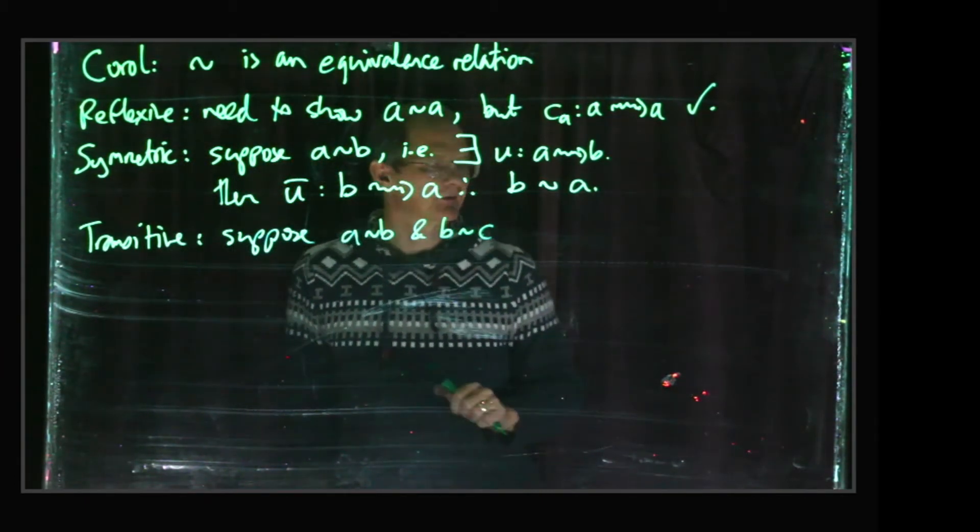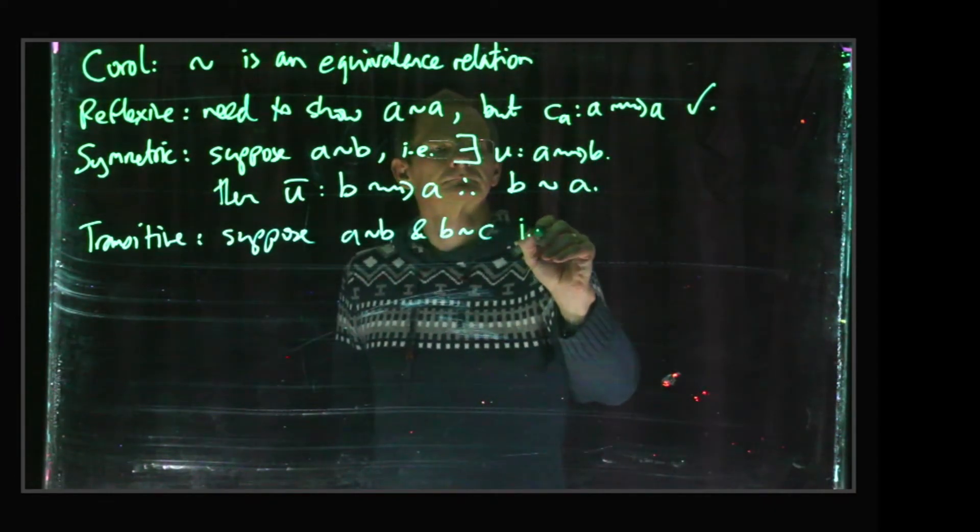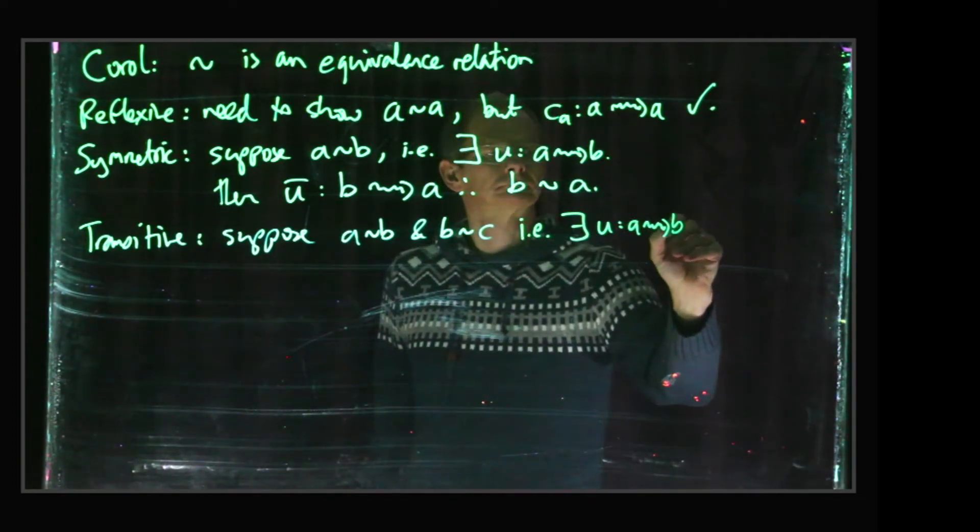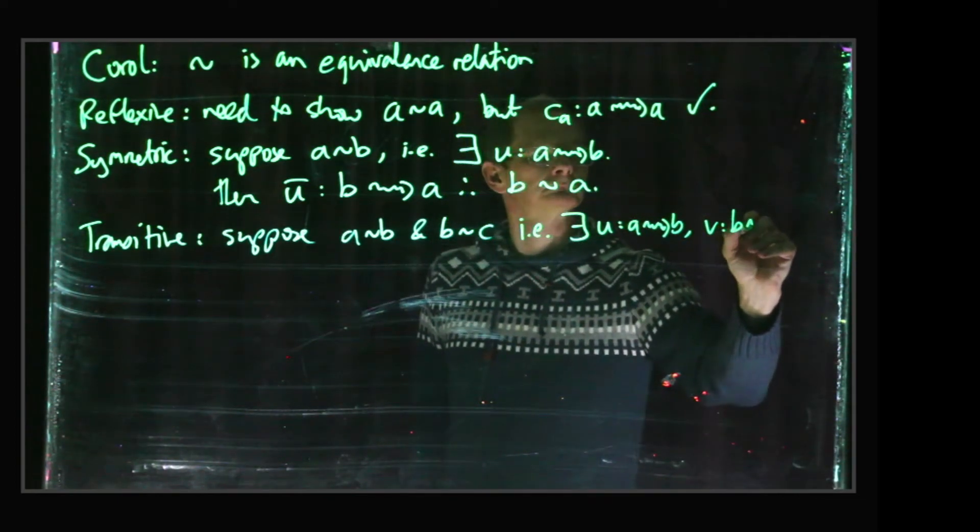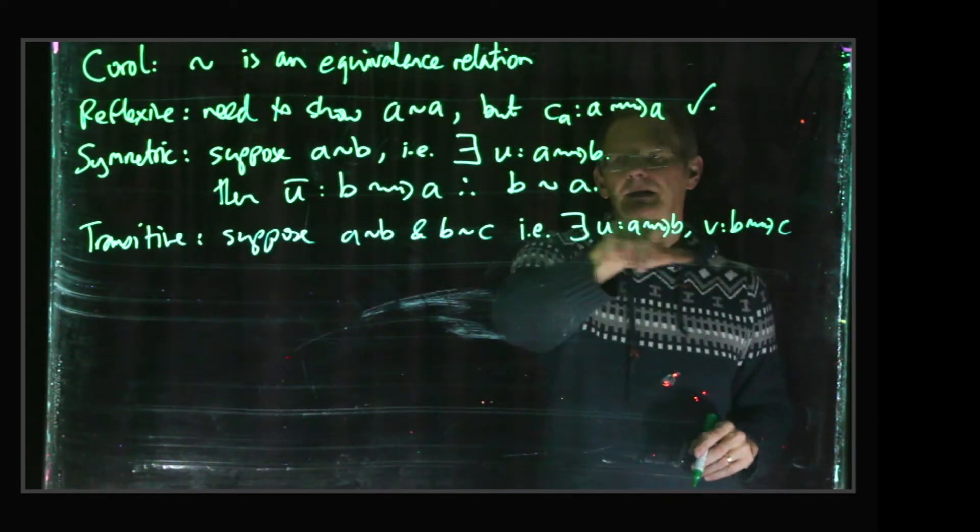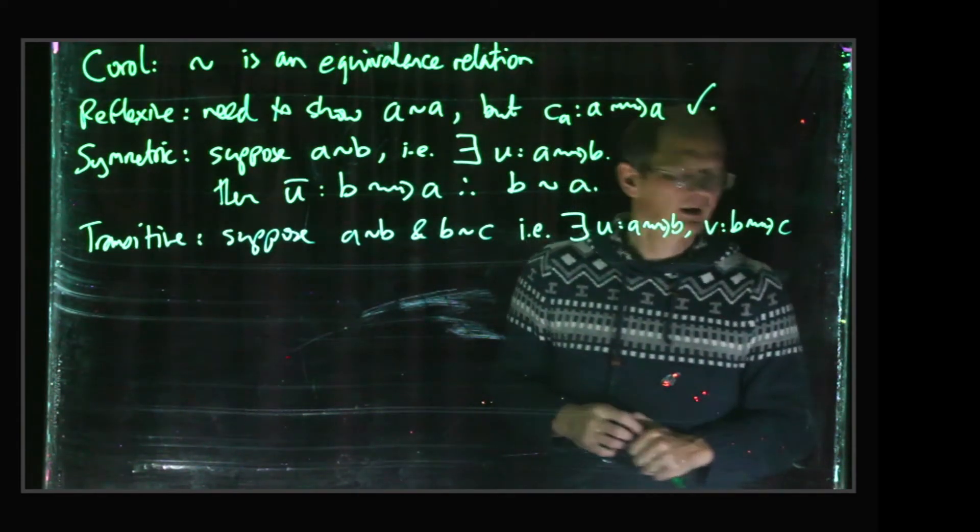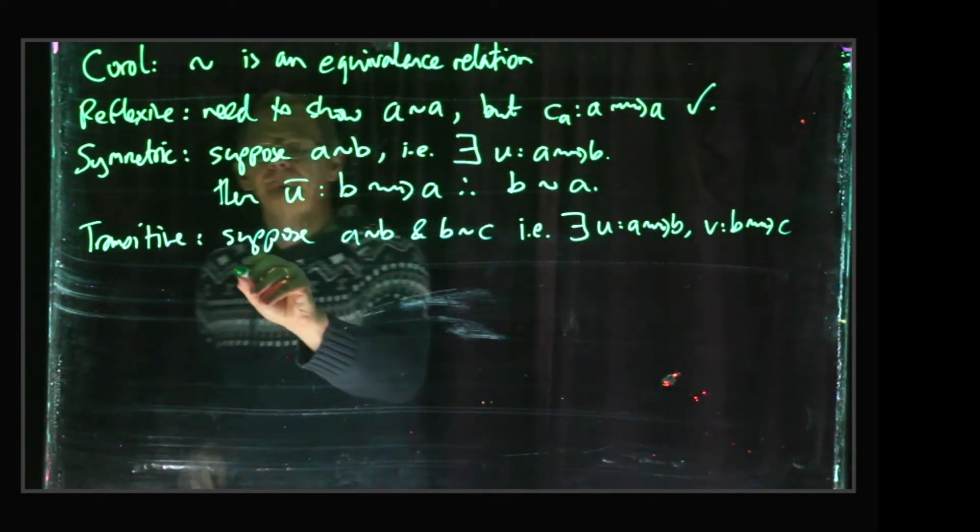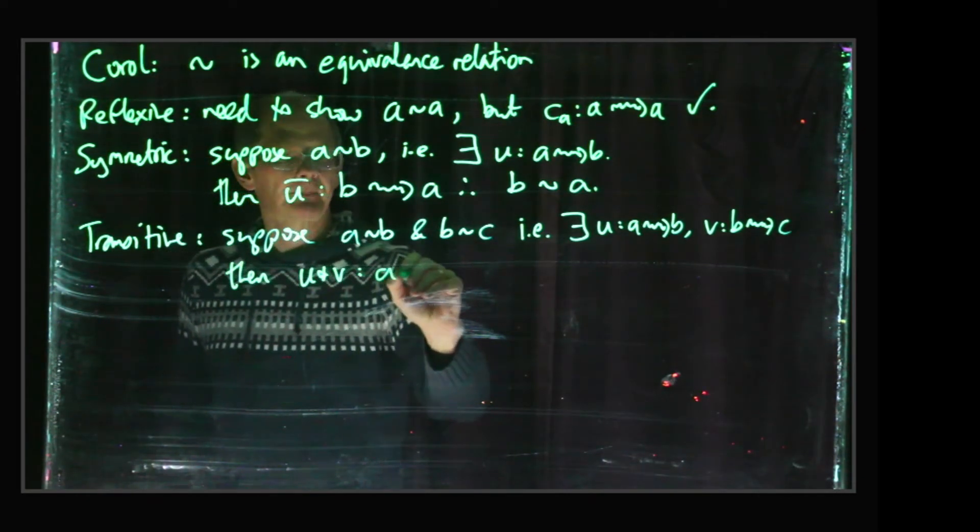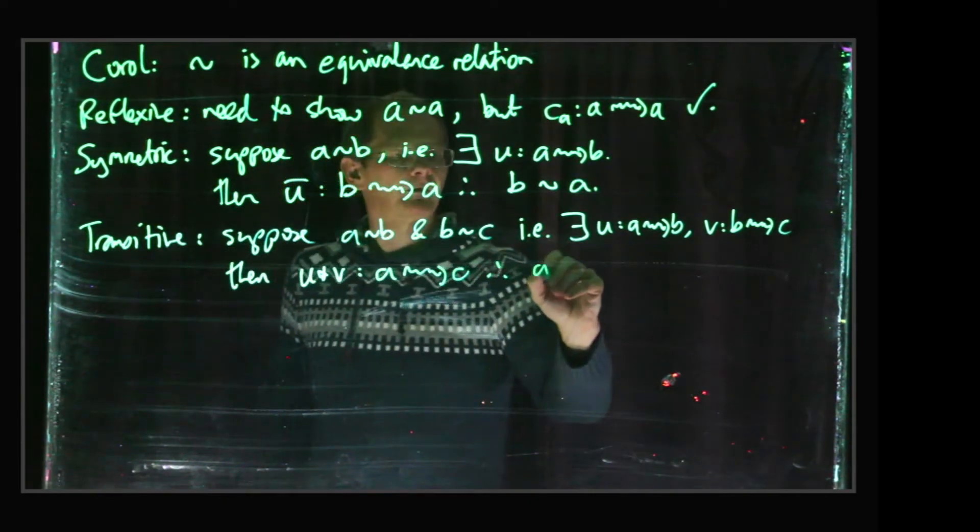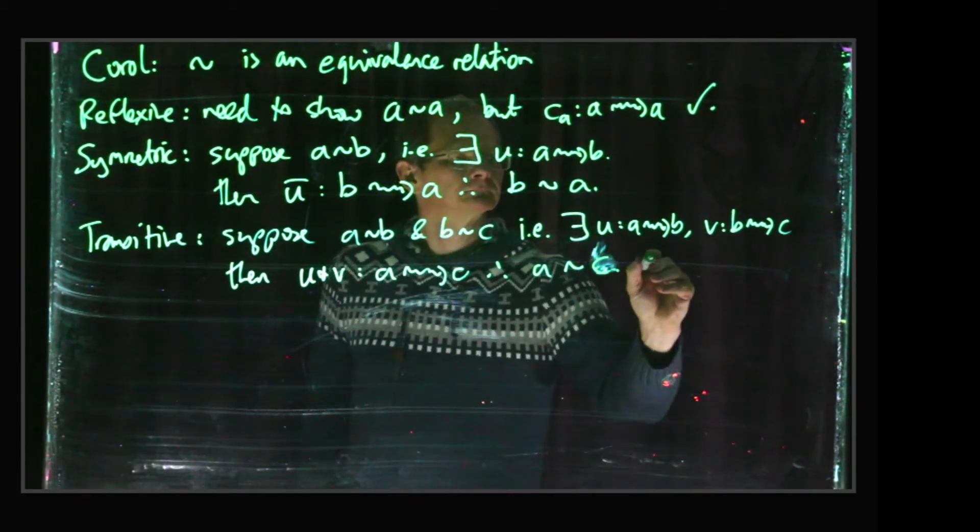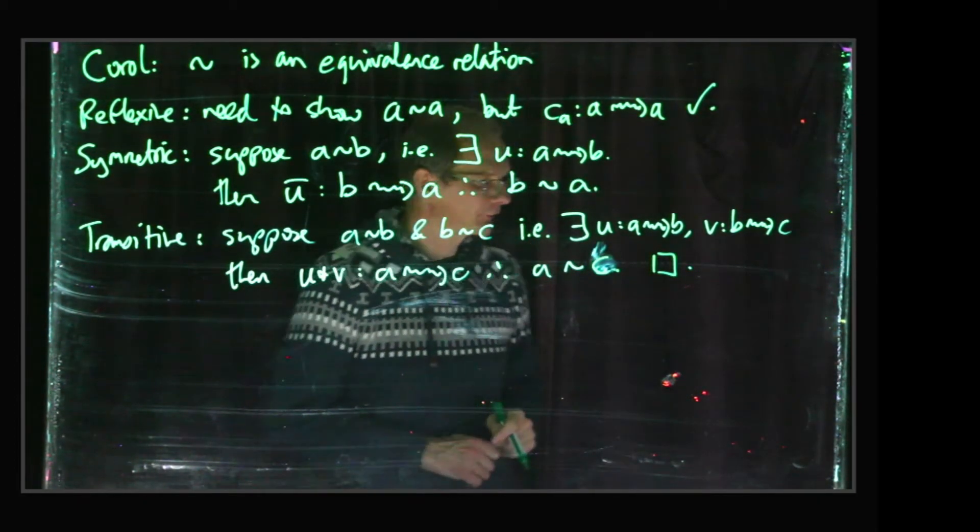So suppose A is related to B and B is related to C. So A is related to B means there exists a path U from A to B, and to say B is related to C means there exists a path V from B to C. Then this joined path U star V, that's a path from A to C, so we see that A is related to C. So this proves that we've got an equivalence relation.